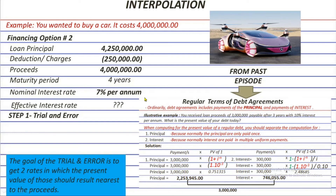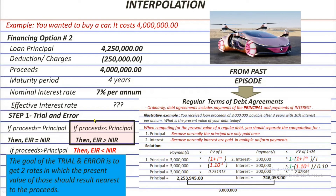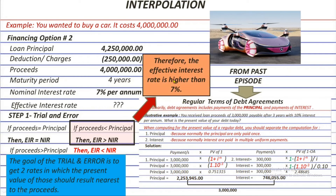There are a lot of rates that can be tried, so how do we narrow it down? Since the proceeds are lesser than the principal, the effective rate must be higher than 7%. So you don't need to try percentages below 7%. Let's try using 10% and get the present value of the principal and interest based on that rate.